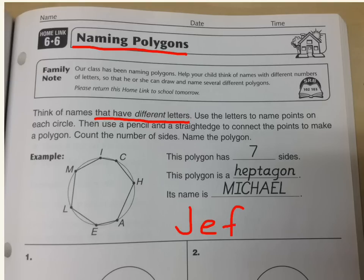I can't choose the name Jeff because there are two F's in that name, so that won't work. You're going to choose a name that has different letters, then put the points on a circle like they've done here, connect the points using a pencil and a straight edge, then count the number of sides and give the polygon a name.